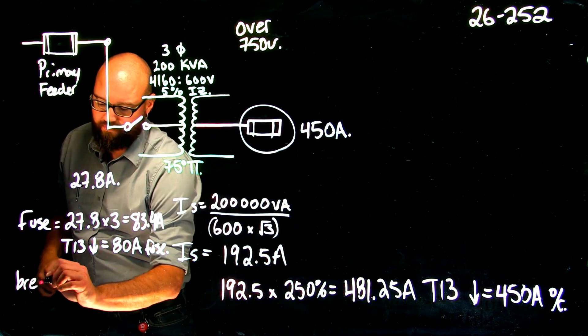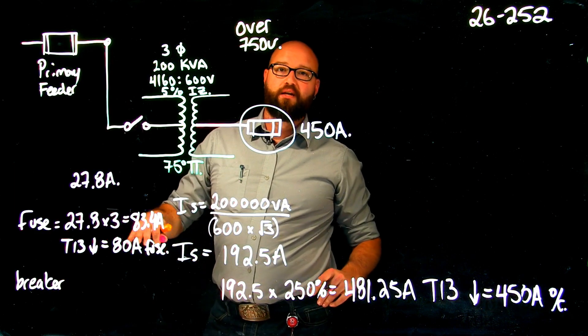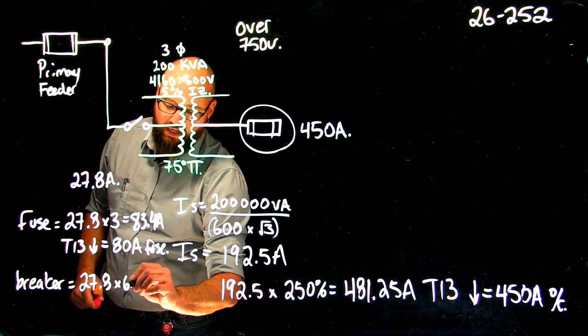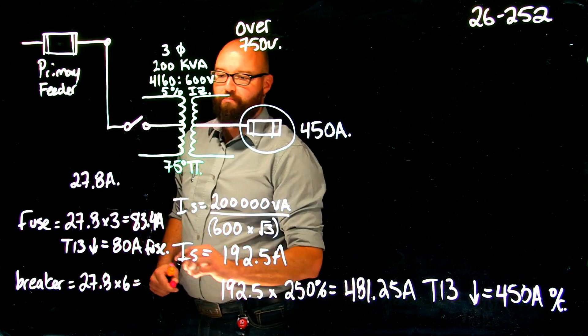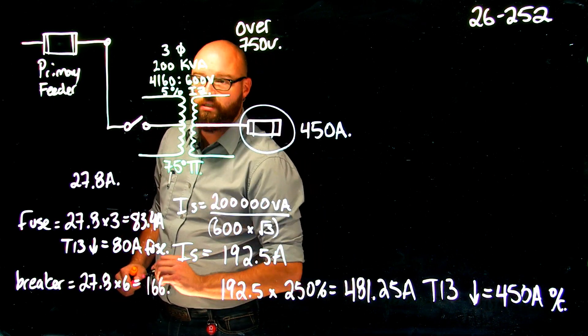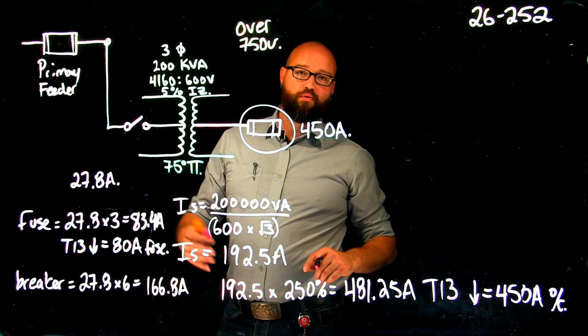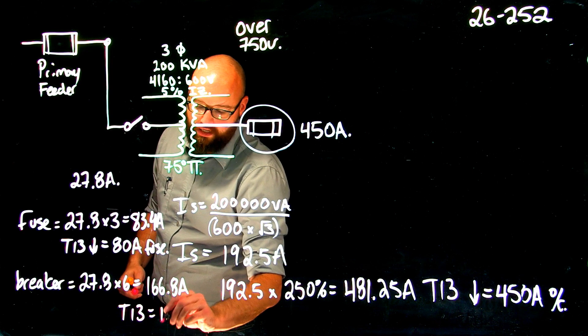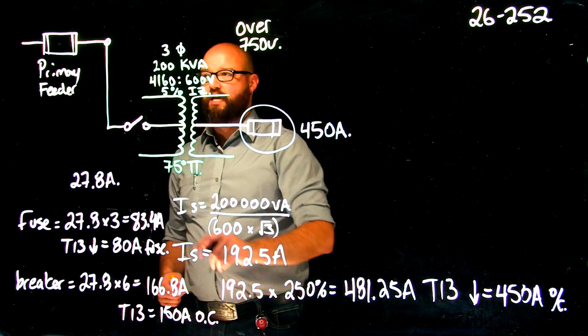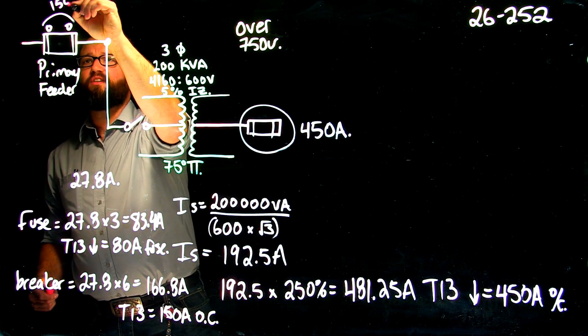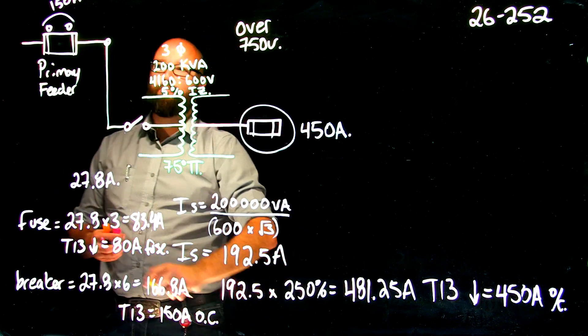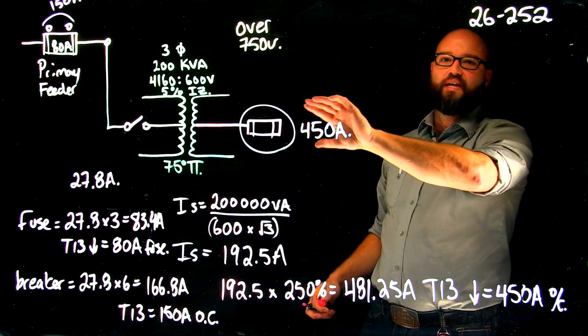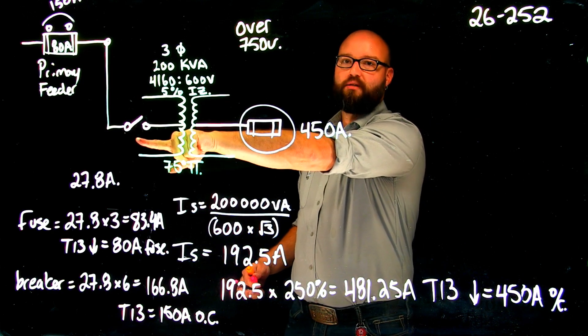If I was to go with a breaker, my multiplier according to table 50 is now 600% because I'm using a breaker. So 27.8 times six or 600% gives me a maximum rated value of 166.8 amps. The rules tell me that I shall not exceed this rated value or 600% of the rated value. So we go table 13 and we select a 150 amp overcurrent. In this case, if this was a breaker, it would be a 150 amp breaker. If it was a fuse, we would be looking at an 80 amp fuse.